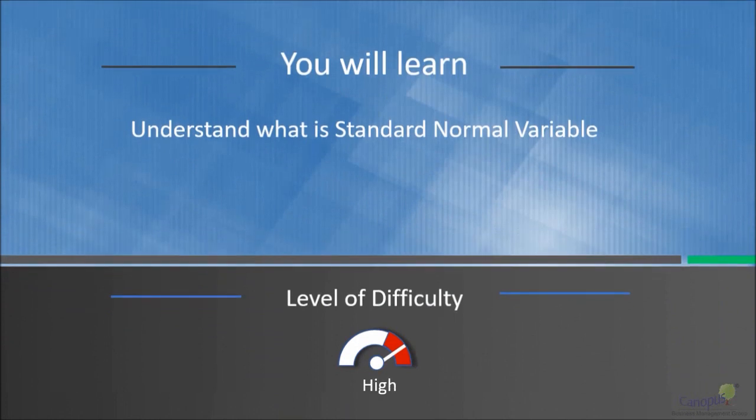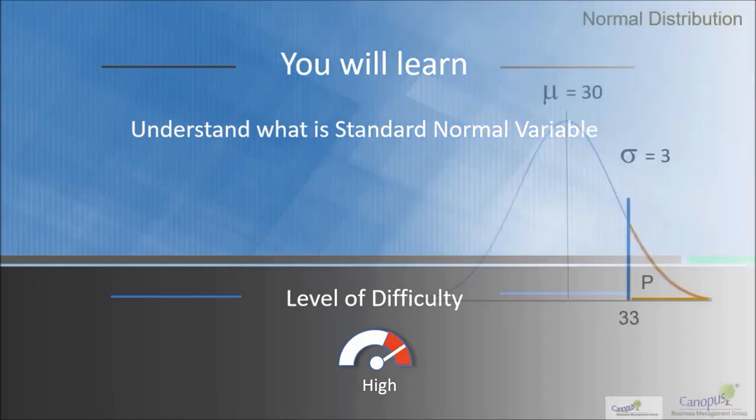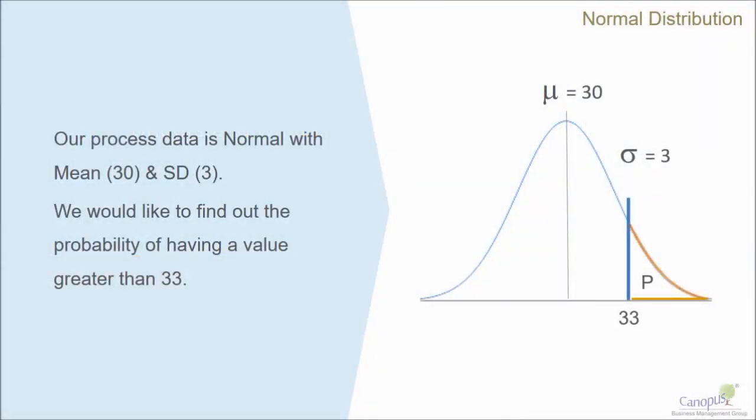In this lecture, we will learn about what is a standard normal variable. Let's take a small example. Let's say we have process data and we know that the data is normal with a mean of 30 and a standard deviation of 3.